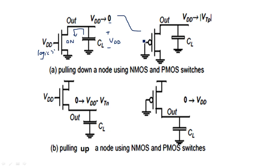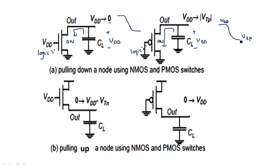For the PMOS transistor, to turn it on we apply zero (logic 0) at the gate. When on, the capacitor discharges through it. However, for PMOS the capacitor cannot discharge fully to zero — it only discharges to the threshold voltage of the PMOS transistor. With NMOS, the capacitor can discharge all the way from VDD to zero potential.